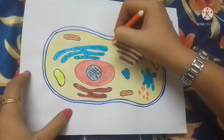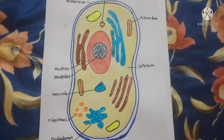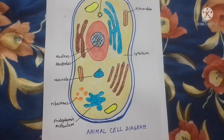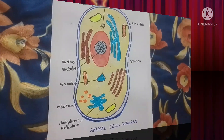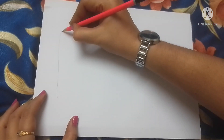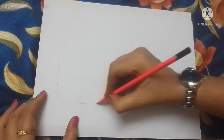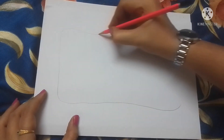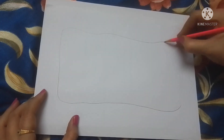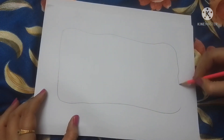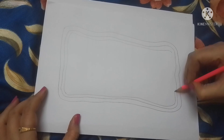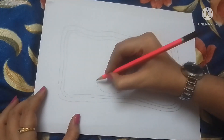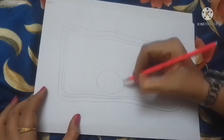Don't forget to do the labeling of any scientific diagram. Now let's see how we can draw a perfect diagram of a plant cell. There are differences between animal cells and plant cell structure. Animal cells are mostly round in shape, while plant cell structures are mostly rectangular or hexagonal in shape.